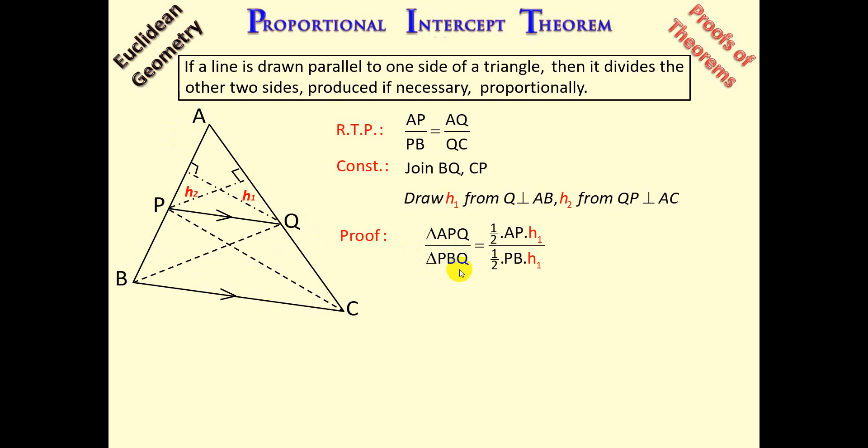Now we know the area of a right triangle would be half base times height. So if we look at triangle APQ, it's half AP, which is our base, and the height is H1. And if we take triangle PBQ, it's half base, which is PB, times the height, which is H1. The halves cancel, the H1s cancel, and we're left with AP over PB. That's what we get on our left-hand side.